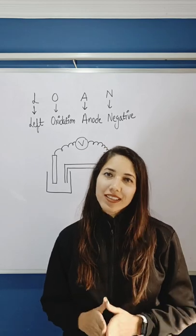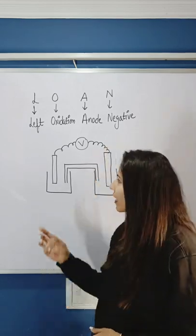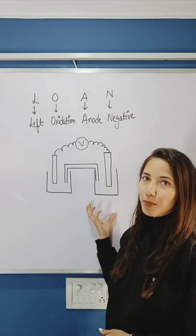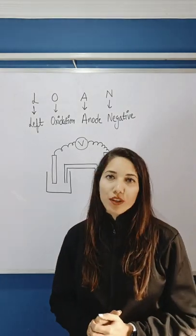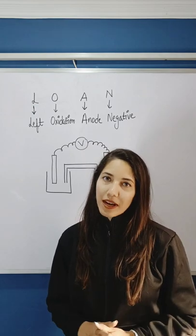So inside our galvanic cell, we know that there are two half cells—one is on the left hand side and one is on the right hand side. So how can we differentiate between these half cells? Let's see that.